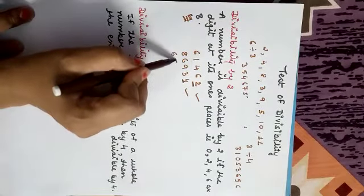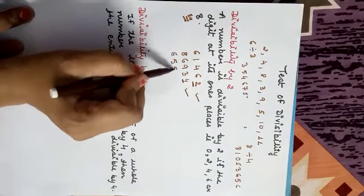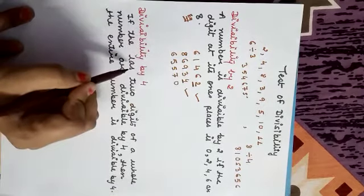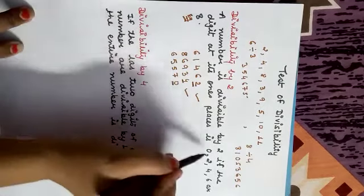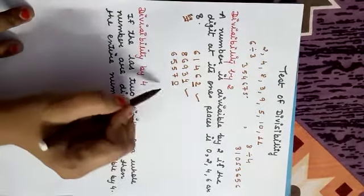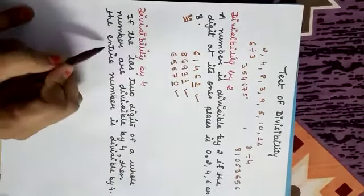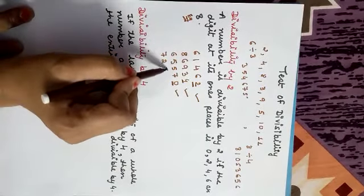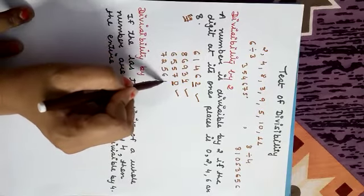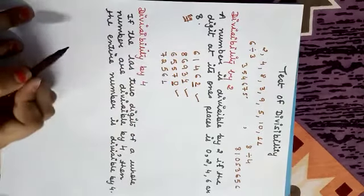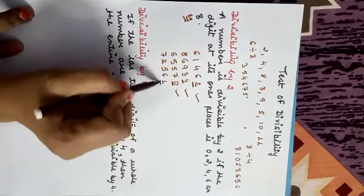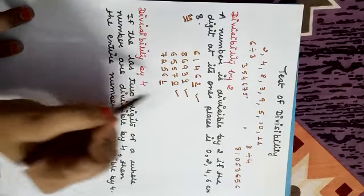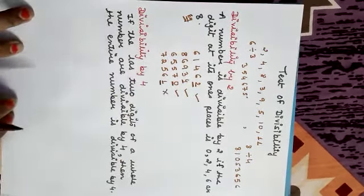Another example: 65,570 — the digit at one's place is 0, so it is also divisible by 2. But for 72,561, the one's place is 1, so it is not divisible by 2. Clear?